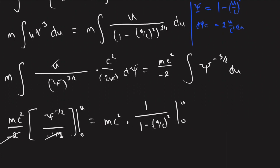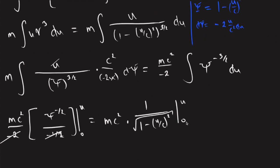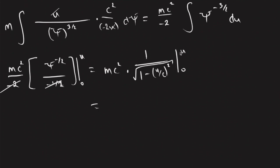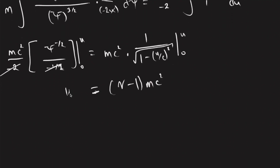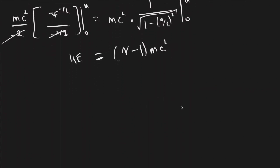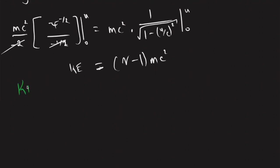We have the square root here. We know that this is the gamma function — if we plug in zero to the gamma function we get one, and when we plug in u we get gamma as a function of u, so we just leave it as gamma. So we're getting gamma minus 1 times mc squared. In other words, kinetic energy is equal to gamma mc squared minus mc squared. That's the relativistic kinetic energy equation we just derived: KE equals (gamma minus 1) times mc squared.